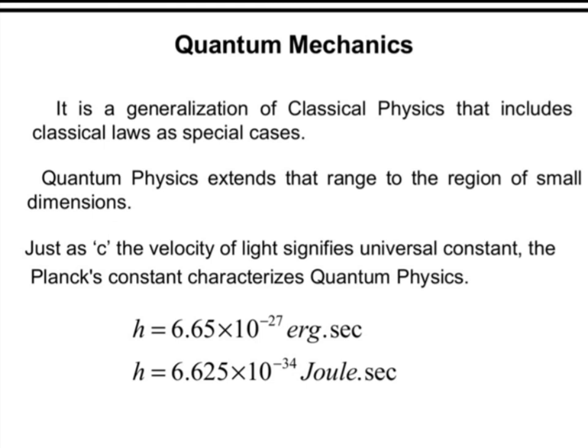Microscopic properties can be learned through quantum chemistry, quantum mechanics, or quantum physics. Just as C is the velocity of light representing a universal constant, Planck's constant characterizes quantum physics. The value of H, Planck's constant, is 6.65 × 10⁻²⁷ erg·second, or more commonly H = 6.625 × 10⁻³⁴ J·s. This constant was found by Max Planck.